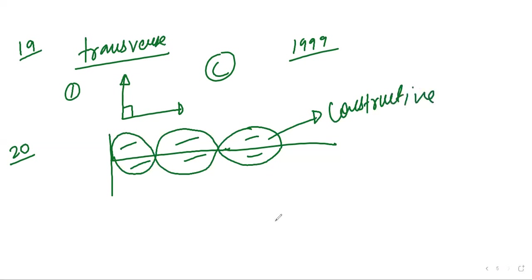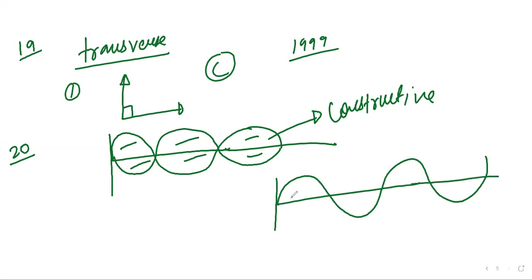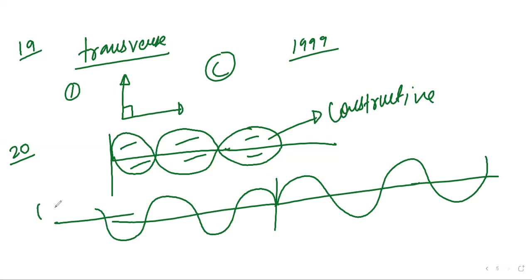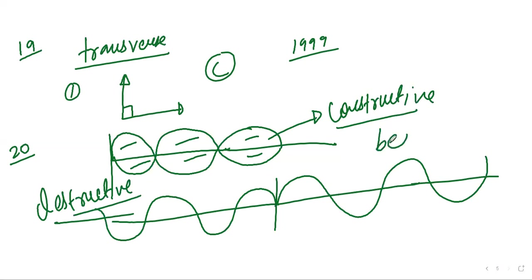When one wave is moving forward and another backward, it produces destructive interference. The answer is: it forms constructive and destructive interference — beats. This question was asked in 1992.